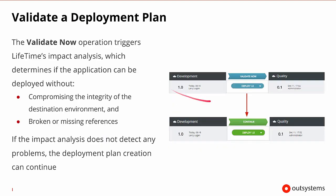Once a plan has been created, a validate button will appear at the top of the environment list. This allows Lifetime to do an impact analysis before those applications are actually deployed. We wouldn't want the application deployed if there would be anything wrong with the integrity of the destination environment, or if our application has any broken or missing references. As long as the impact analysis doesn't detect any problems, the validation buttons will turn green, allowing us to continue and perform the deployment.